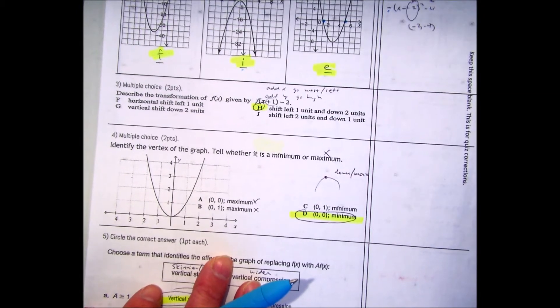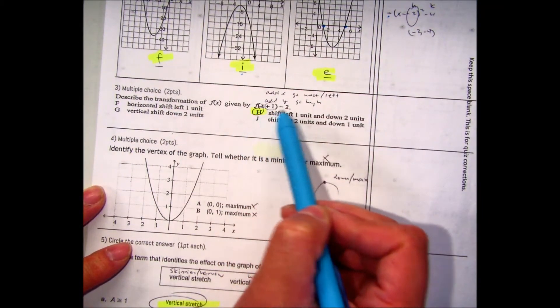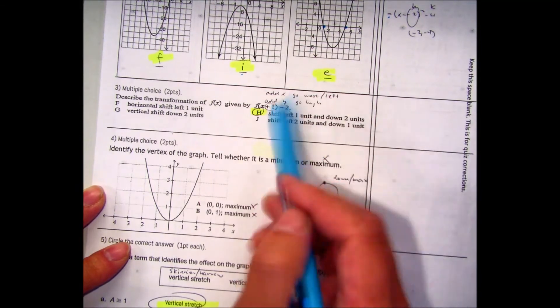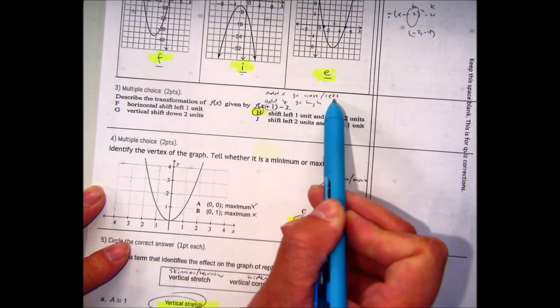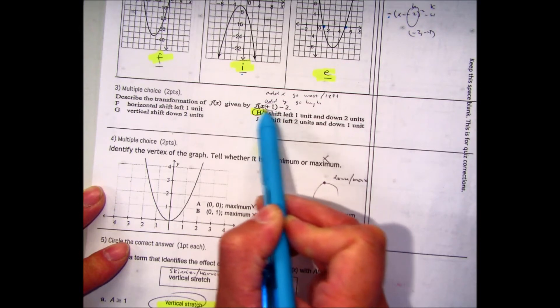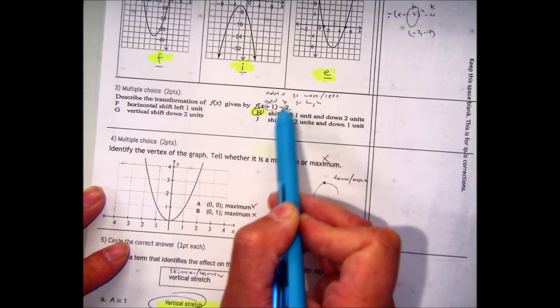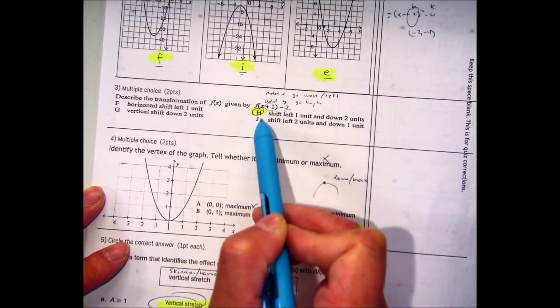Question number 3. Describe the transformation of f of x given f of x plus 1 minus 2. There's a silly phrase. Add to x, go west or left. Add to y, go high. So here's adding to x. So that means your graph is going to go left. And then this is not adding to y, just subtracting. So not going high, not going up, you're going to go down 2. That would be letter H.